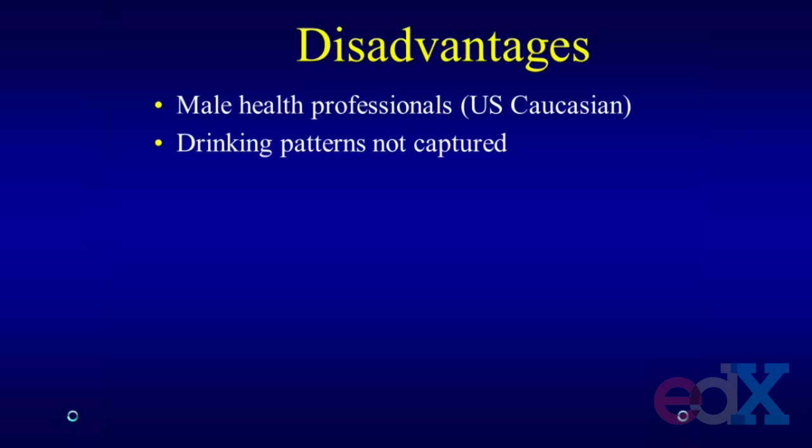Another issue is that alcohol is a complicated thing to study. It's really difficult to capture drinking patterns. Our questionnaire asked people to report their average consumption over the last year, and very few people drink the same amount every day. On some follow-up questionnaires we did try to get at issues related to drinking patterns, but we didn't have it every four years, so we were not able to incorporate that in detail in this analysis. That is one of the potential disadvantages in how we assessed alcohol.